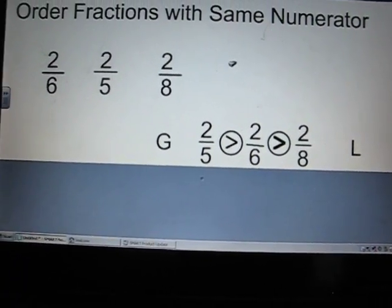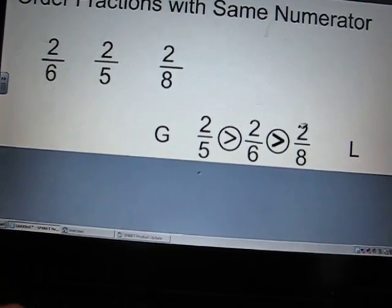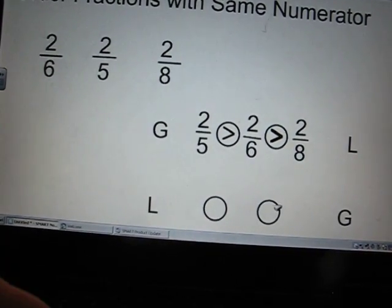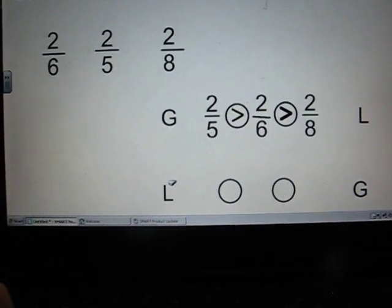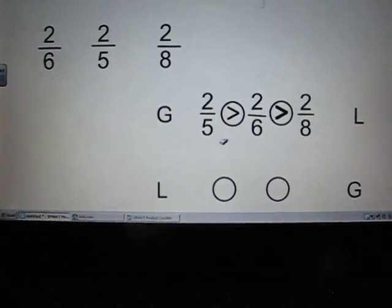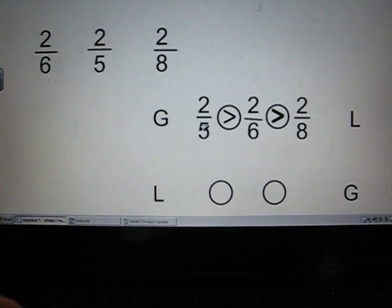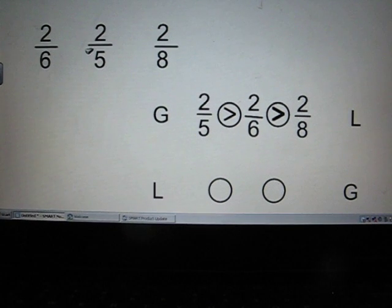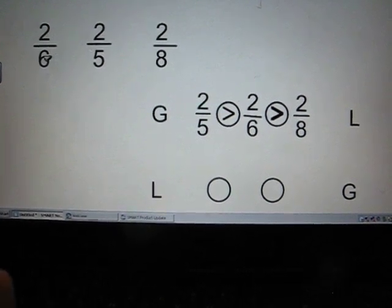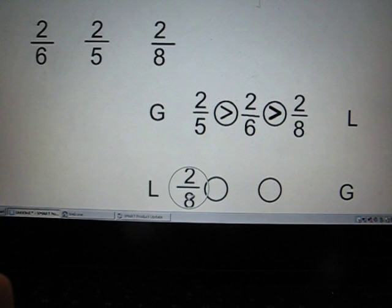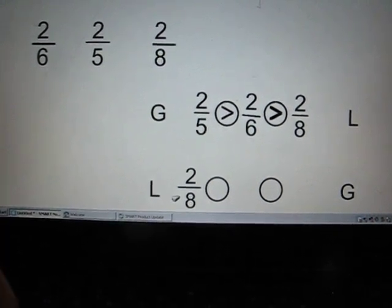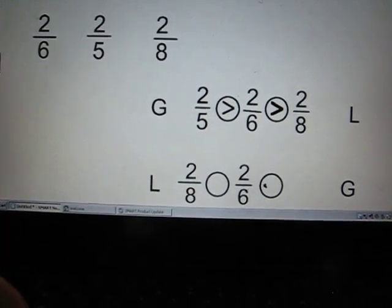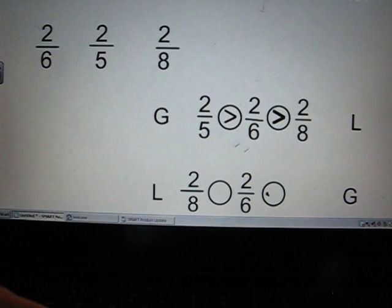Well, what if the question asks the opposite? What if it asks us to go in order from least to greatest? Well, we've already done most of the work. We just have to flip it. Well, least, smallest. Which one has the smallest pieces? Eighths, fifths, or sixths? I hope you said eighths. Two-eighths is the smallest. What's the medium size? Two-sixths. And what is our largest pieces? Two-fifths.